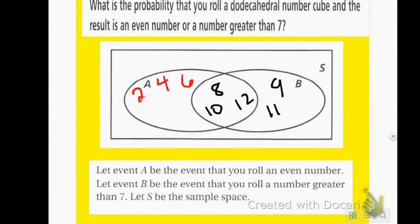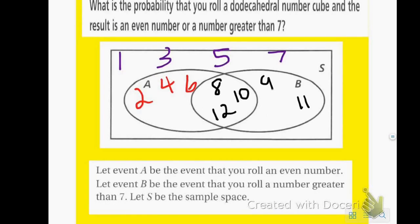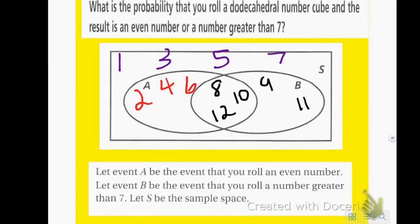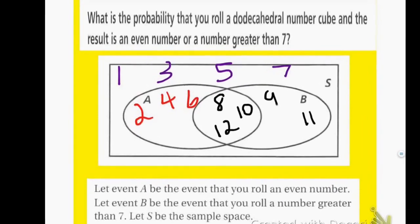Now I want to complete circle B. Event B is the event you roll a number greater than 7. Notice I moved 8, 10, and 12 to the center, or the intersection of A and B, because they're also in set B. So 9 and 11 are also greater than 7 and go into B only. To complete the Venn diagram, I need to put the elements in the sample that are not in circle A or circle B.